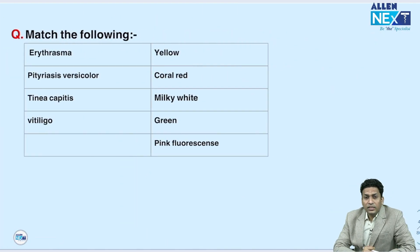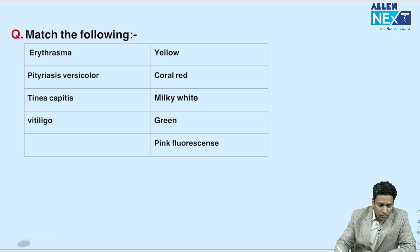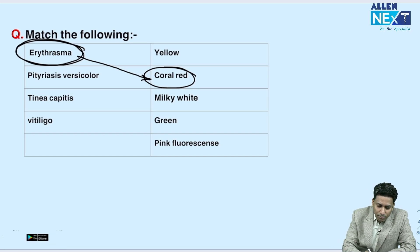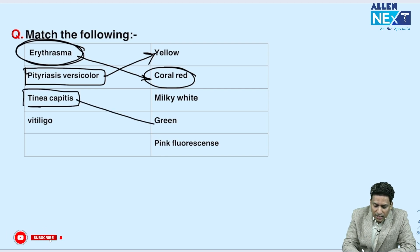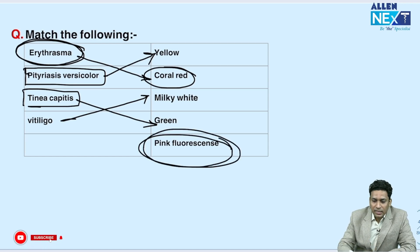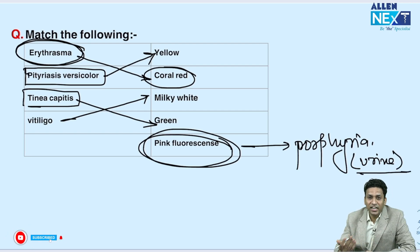There was a match-the-following question asking which type of fluorescence is seen under Wood's lamp. In erythrasma, coral red fluorescence is seen. In Pityriasis versicolor, yellowish fluorescence is seen. In Tinea capitis, green fluorescence is seen. In vitiligo, milky white fluorescence is seen. Pink fluorescence is seen in porphyria — if you examine the urine of the patient you will find pink fluorescence.